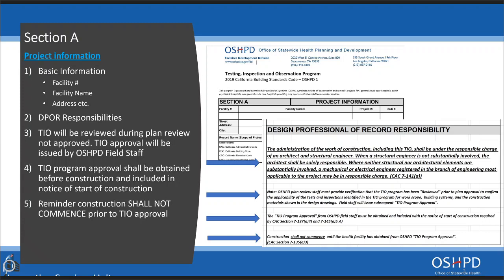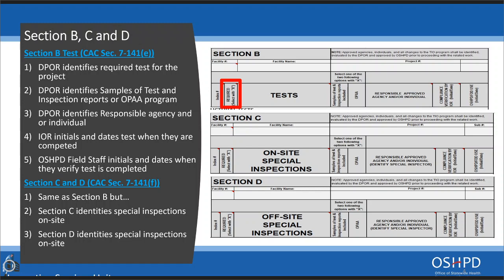Sections B, C, and D cover tests and special inspections. The DPOR identifies the required tests for the project — the DPOR typically has in-depth knowledge of the project, which is why it's their responsibility to identify required tests and inspections before submitting the TIO. The DPOR also identifies whether samples of tests and inspection reports will be submitted or if OSHPD's pre-approval agency (OPAA) will be used. If the DPOR selects the OPAA box, no samples will be required for that specific test, but the OPAA program only applies to structural elements — not others like penetration-rated assemblies, i.e., fire stopping.